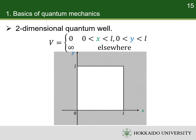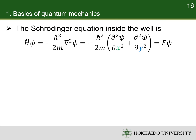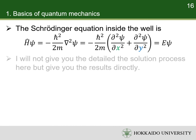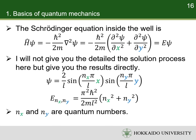Let's use a two-dimensional quantum well as another example. The potential energy is zero when both X and Y are between zero and L, and is infinity elsewhere. Like the one-dimensional quantum well, there is no probability to find the particle outside the well, so we only need to solve the Schrödinger equation inside the well. I will not give you the detailed solution process, but give you the results directly. We can see that the forms of the wave function and energy are similar to the one-dimensional case. However, there are two quantum numbers for the X and Y directions, respectively.